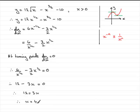We need the y coordinate of the turning point. So all we need to do is substitute x equals 4 into the equation for y. Go up to the top here and we can say that when x equals 4, y will equal 12 times the square root of 4 minus 4 to the power 3 over 2 minus 10.